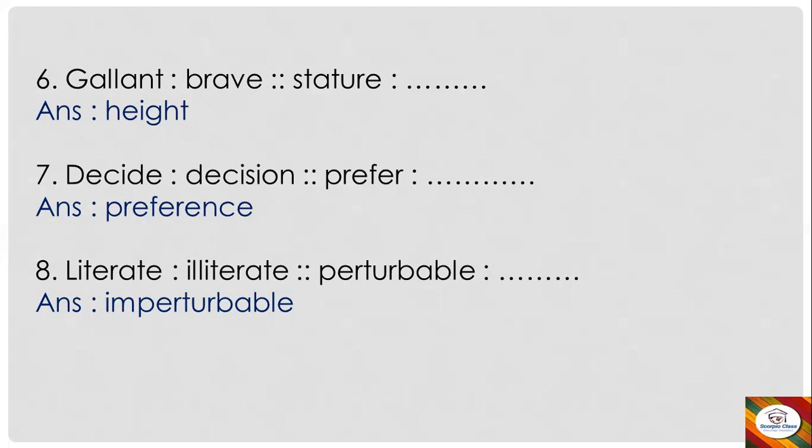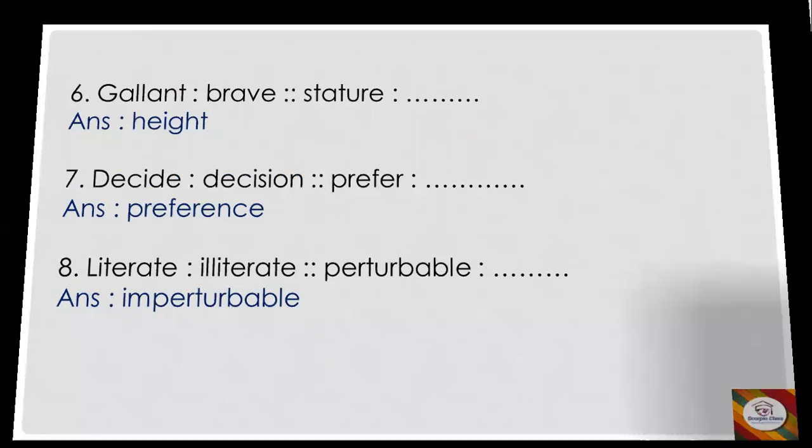So: 'decide' is to 'decision' as 'prefer' is to 'preference'. Next question: 'literate' is to 'illiterate' as 'perturbable' is to dash — so you have to be very careful while looking at the first pair to identify the relationship.